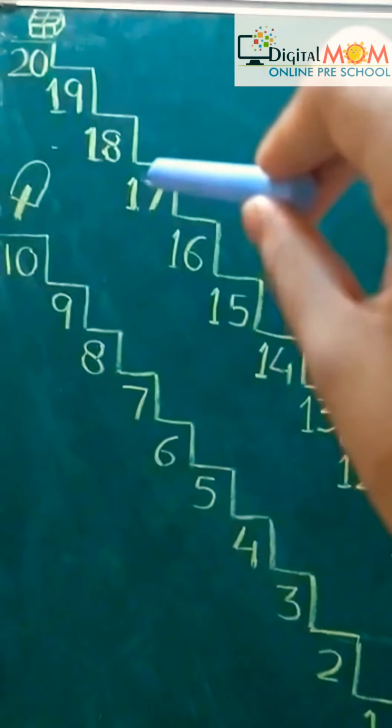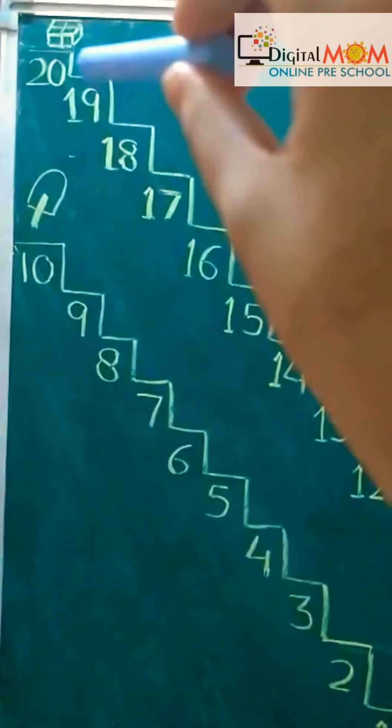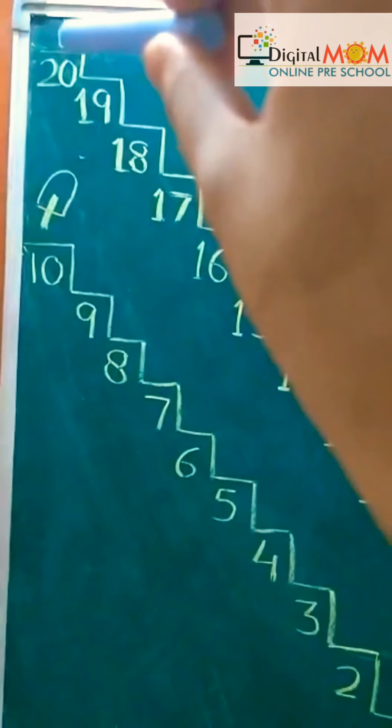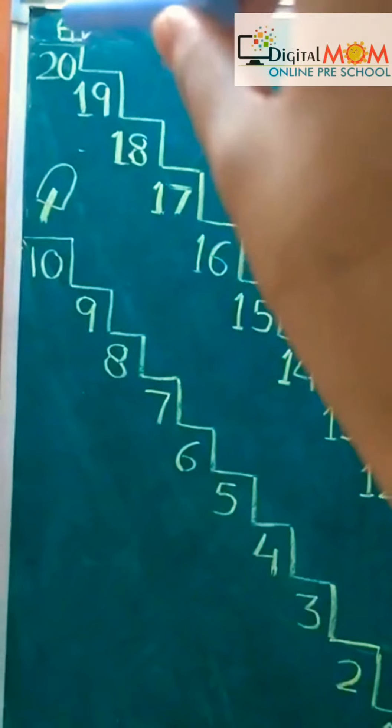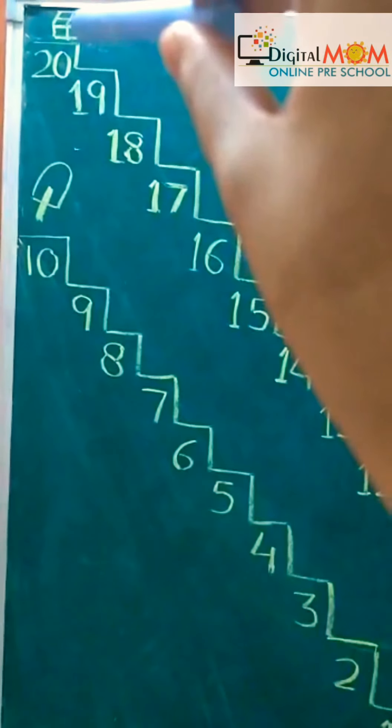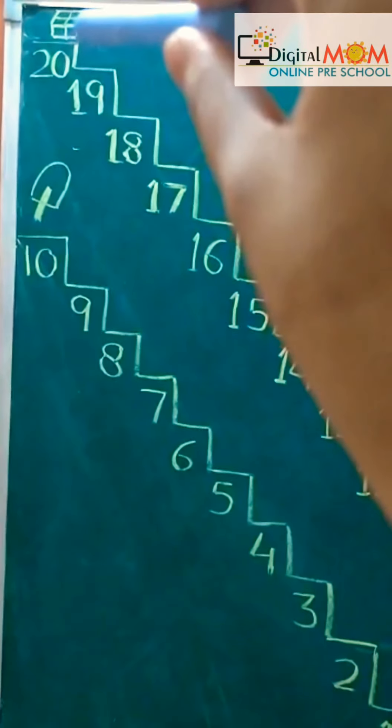11, 12, 13, 14, 15, 16, 17, 18, 19, and here is 20. You got the gift.